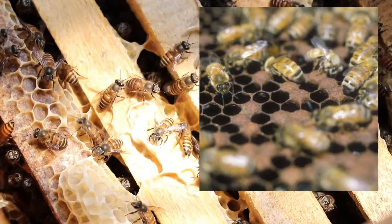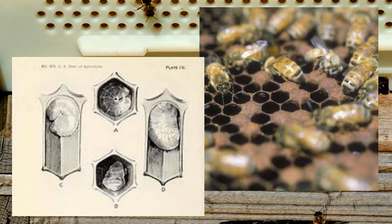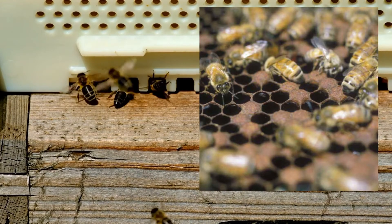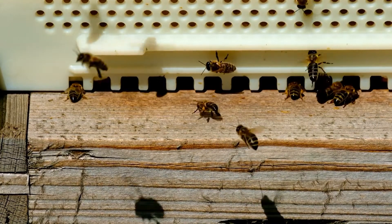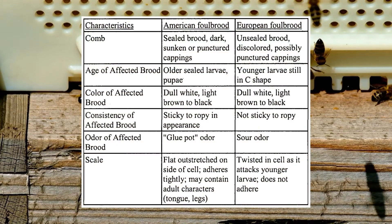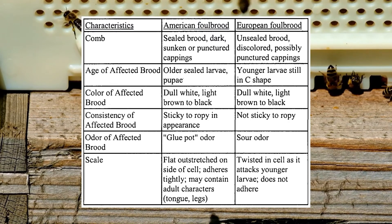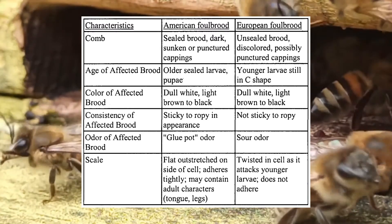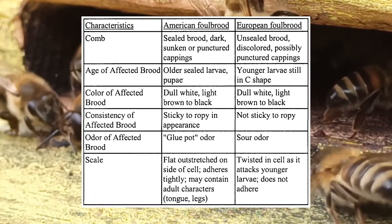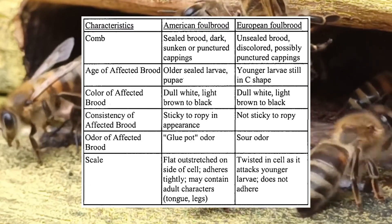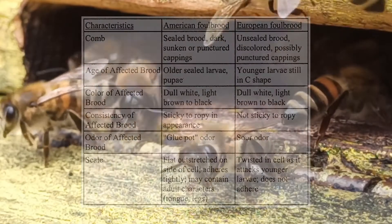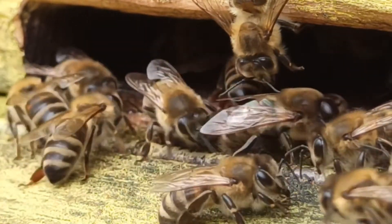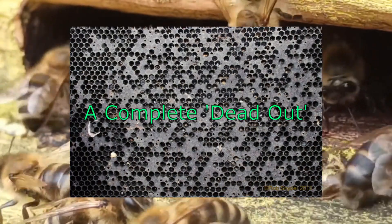During this time the inspector will issue a standstill notice, prohibiting the removal of bees, bee byproducts and equipment from the apiary. If foul brood is confirmed, the inspector will carry out necessary disease control measures. These can include destruction of infected colonies (both EFB or AFB), antibiotic treatment (EFB only), or shook swarm (EFB), as well as further inspections of any colonies associated with the disease. After six to eight weeks the inspector will return for a follow-up inspection; if there are no further symptoms the standstill is withdrawn, and the inspector will normally visit again the following season to ensure the disease has been completely controlled.